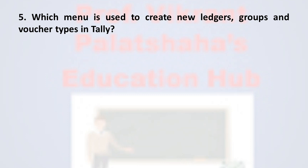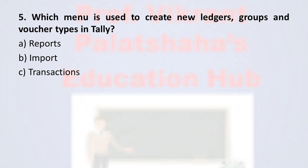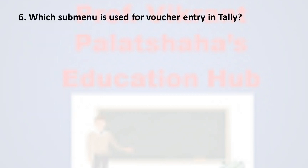Question number five: Which menu is used to create new ledgers, groups, and voucher types in Tally? Option A: Reports, Option B: Import, Option C: Transactions, Option D: Masters. The correct option is Option D, Masters. To create new ledgers, groups, and voucher types, the menu selected in Tally is called Masters, therefore the correct option is Option D.